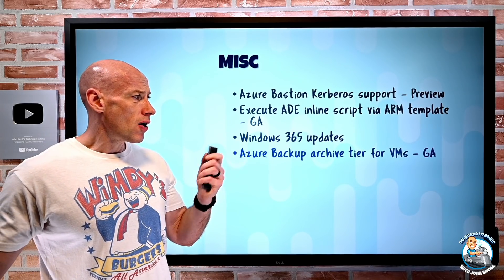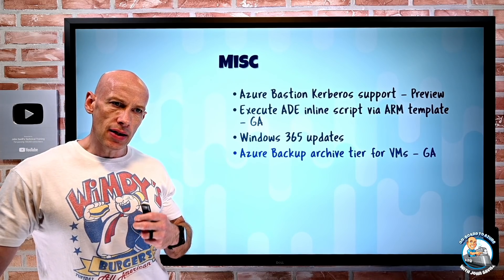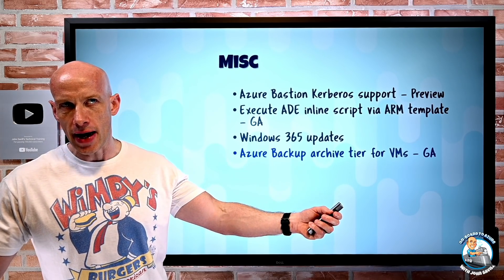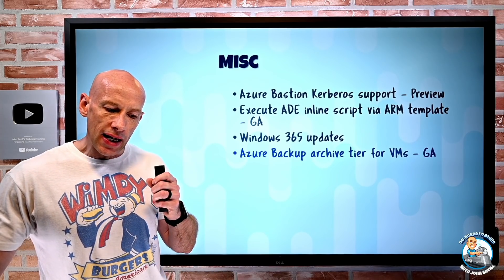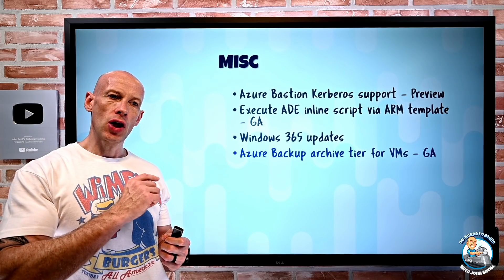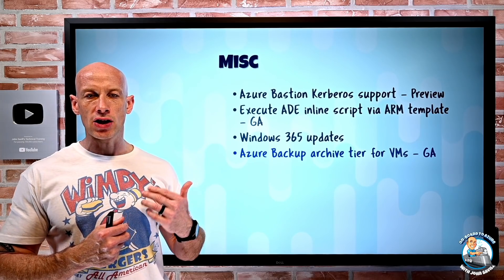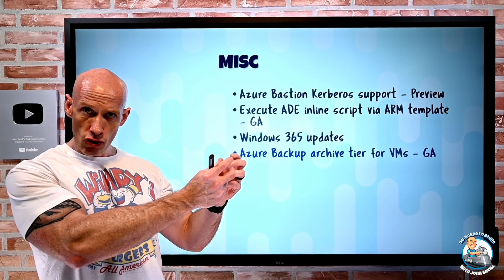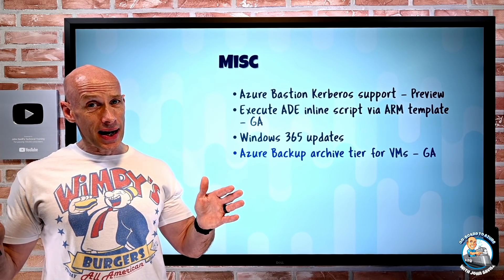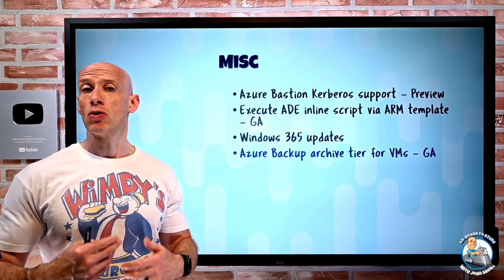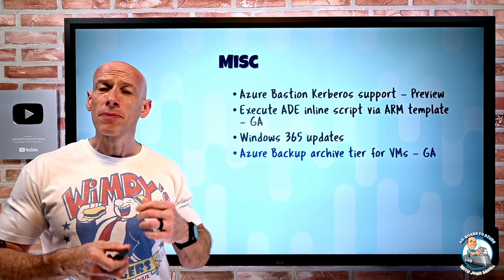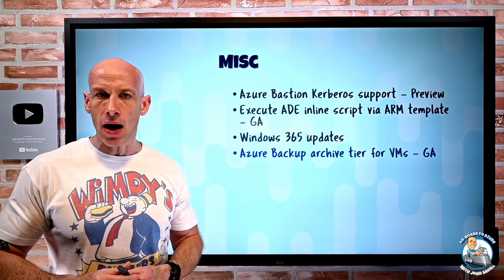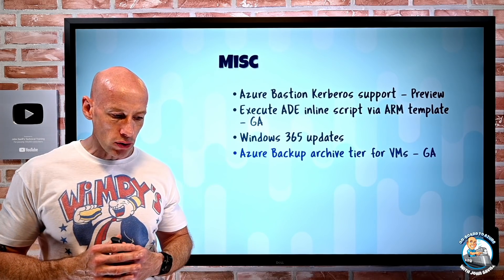Azure Backup Archive tier for VMs has gone GA. Your VM-based workloads — like SQL Server in an Azure IaaS VM or SAP HANA in an Azure IaaS VM — can have long-term retention. Now that long-term retention can be stored in the Archive tier of Azure Backup, which is much cheaper. As part of the move to Archive tier, if it was an incremental backup it converts to a full, meaning it's bigger, but because Archive is so much cheaper it will still generally save you money. Recommendations are provided to tell you which backups to move to Archive tier for more cost-effective storage.